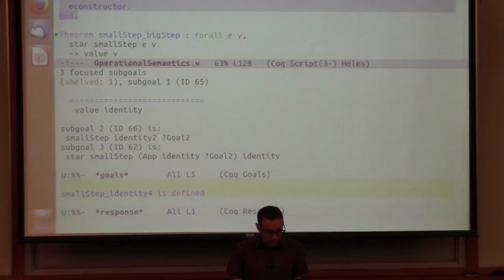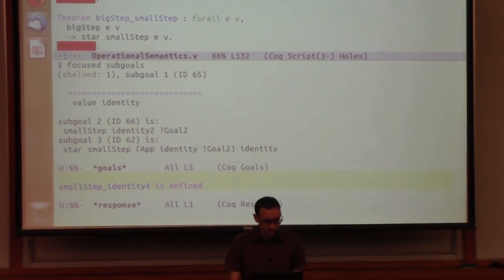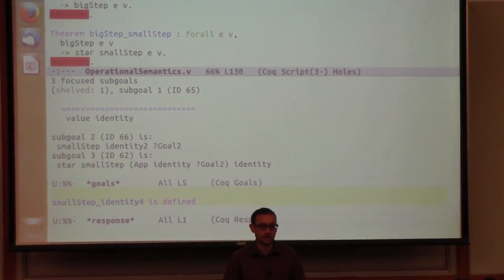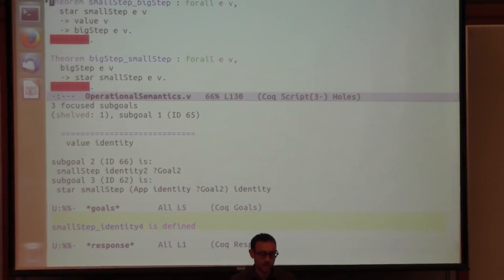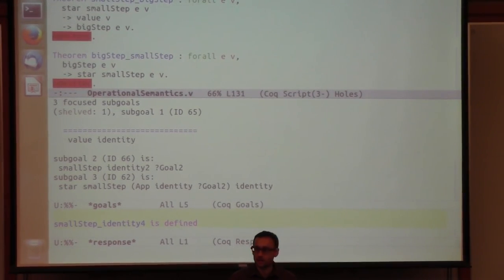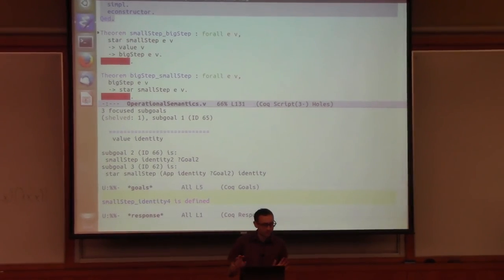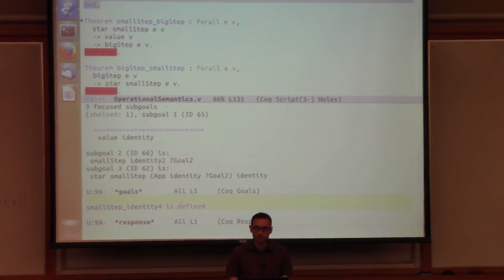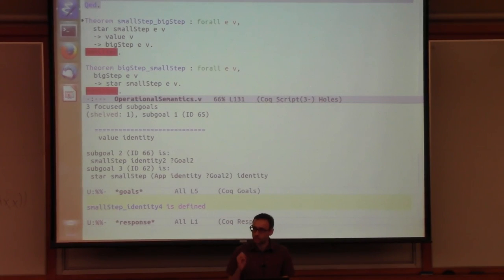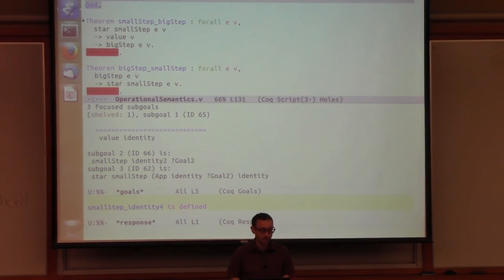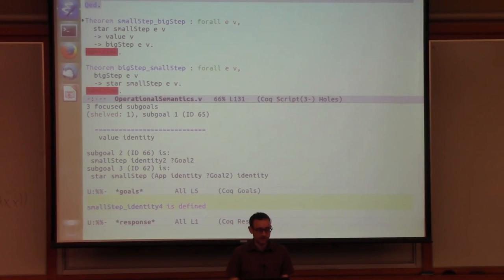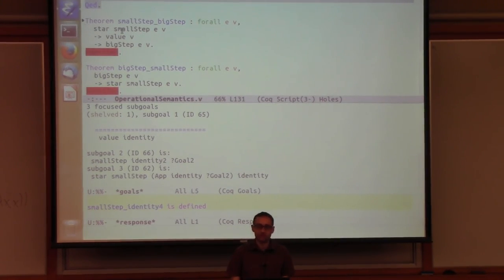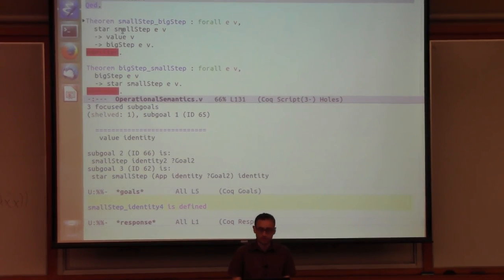One of the things we'd like to be able to prove is that small step and big step semantics are equivalent in an appropriate sense. We can't just say that each relation is contained in the other because that doesn't work. Small step might take just one step and not finish an evaluation process while big step always goes from start to finish in the execution of a program. So one natural way to phrase this connection has to do with what happens when we run small step zero or more times and we finish at a value. That should be equivalent to running big step.